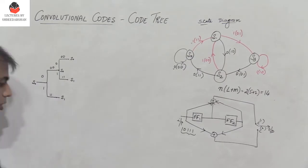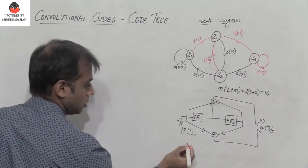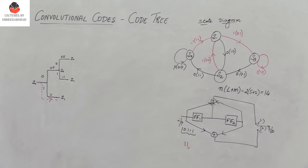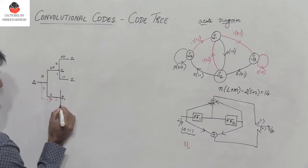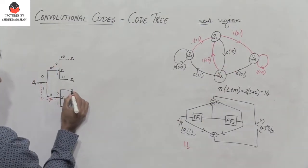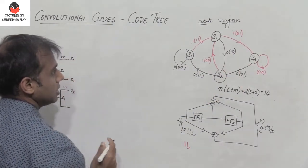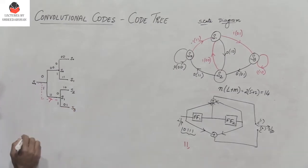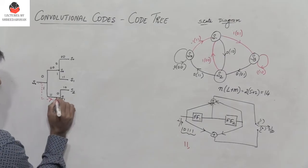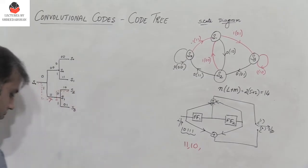Tracing the path for input 10111: initially I am in state S0. The first input bit is 1, so I move downwards and the output is 11. The second input bit is 0. I am now in state S1; 0 is upwards, so I move upwards to state S2 with output 10.